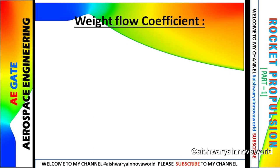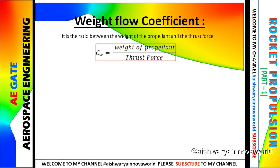Now we come to the weight flow coefficient. The ratio between the weight of the propellant and the thrust force. It can be written as C suffix w. Weight of a propellant W0 can be written as M dot into g. And thrust force can be written as S star, which is equivalent to P0 into S star. P0 is chamber pressure of a rocket. S star is the area of a throat section.